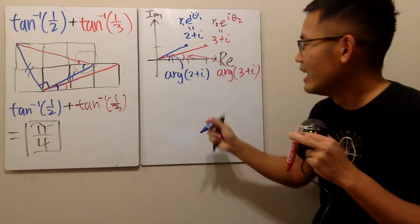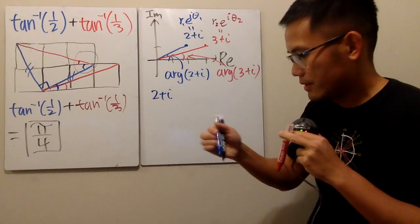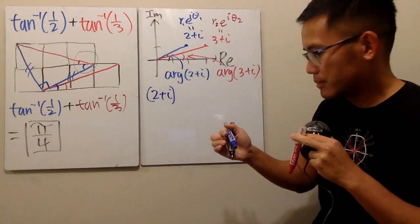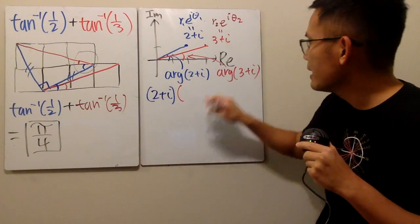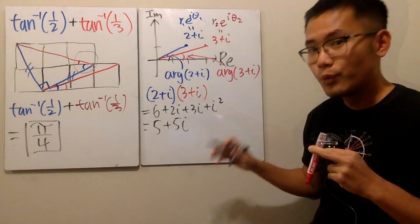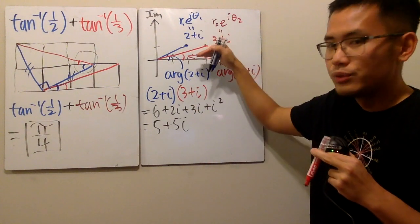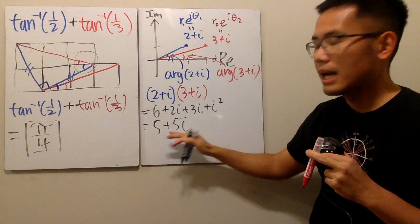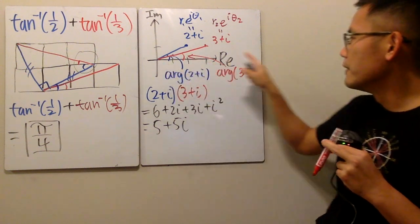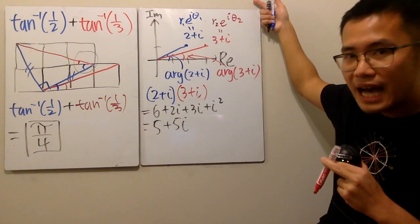So, this is how we can do. Have a look. I'm just going to multiply 2 plus i, which is this complex number, and then I will multiply by 3 plus i. Well, if you multiply these two complex numbers, you will end up with 5 plus 5i. So, it's 5 plus 5i, right?